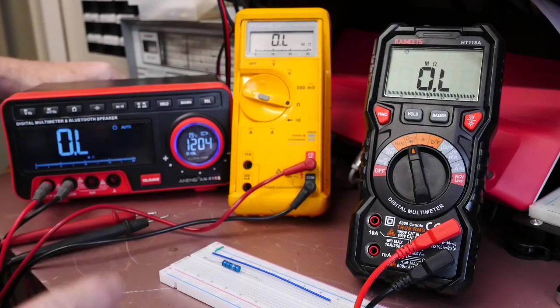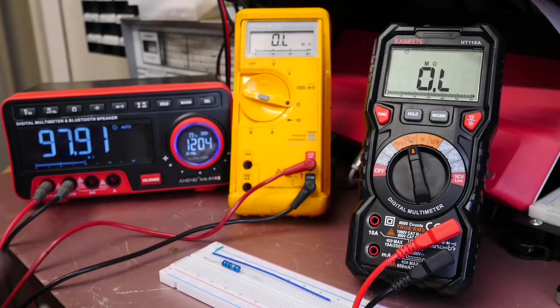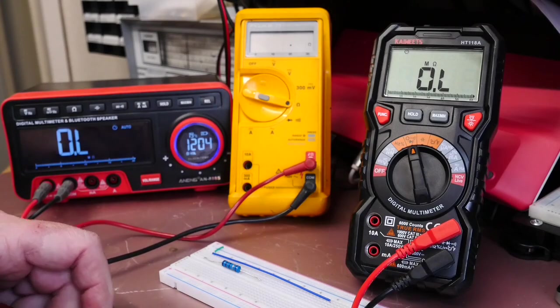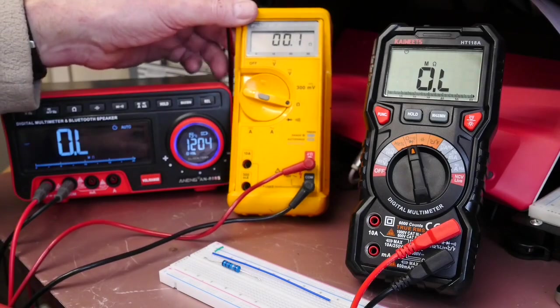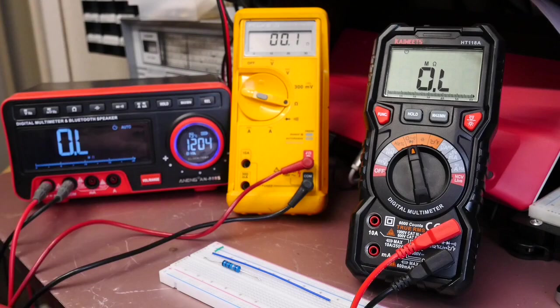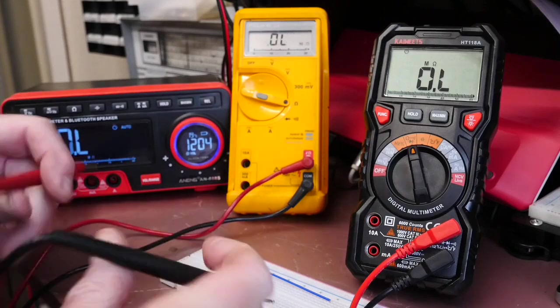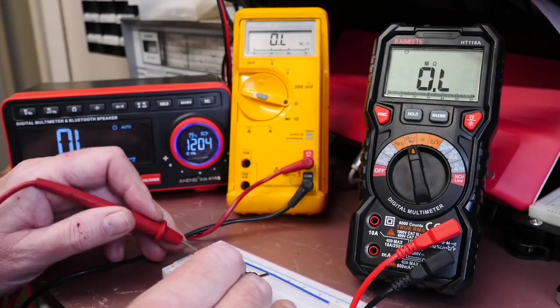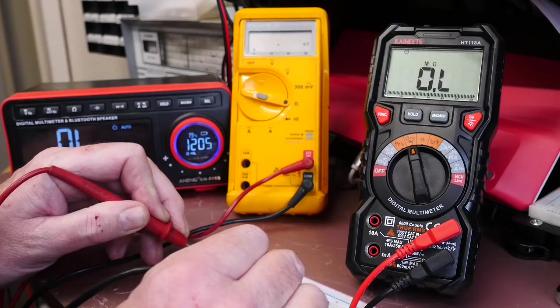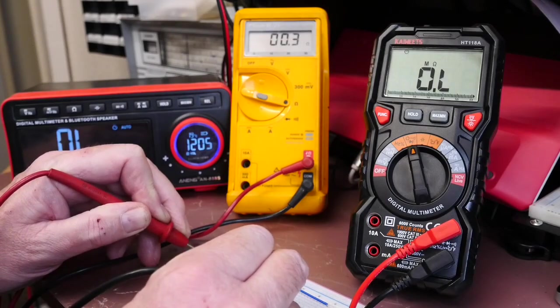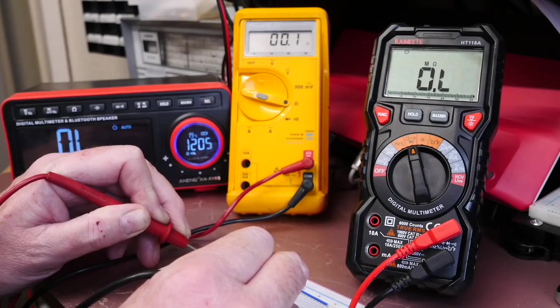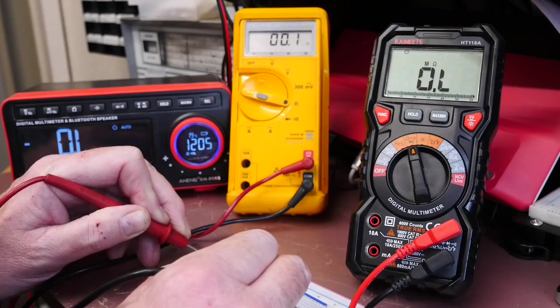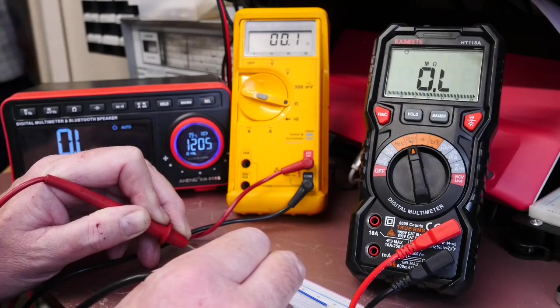Okay so that's the Anang, let's try the Fluke. Just short the probe leads together and on the Fluke it's reading about between 0 and 0.1. So let's now try it on the resistor. 0.3, 0.2, 0.1, so again we just don't know what that is. It's clearly not really giving us any kind of meaningful measurement.